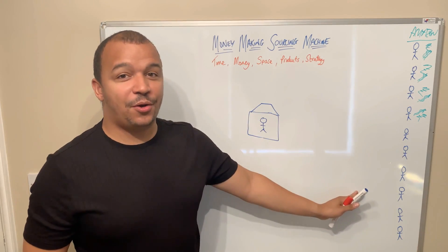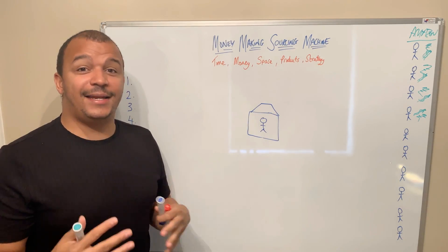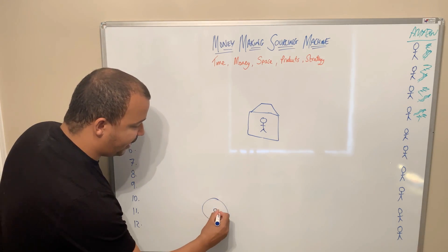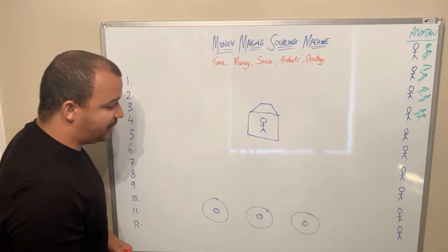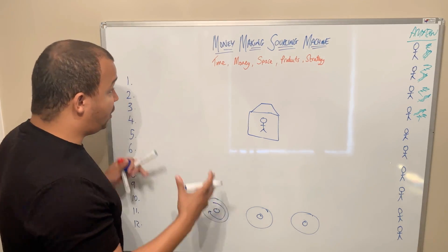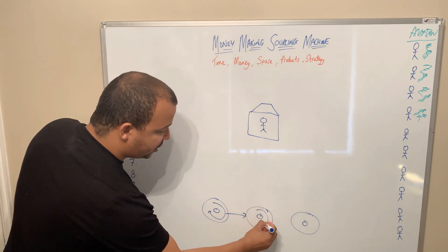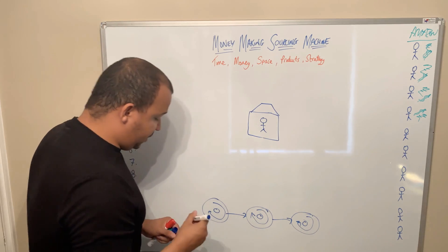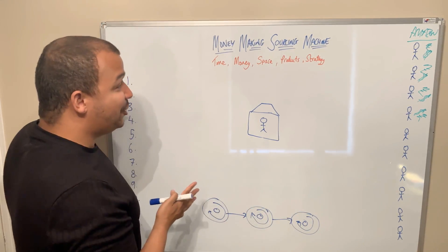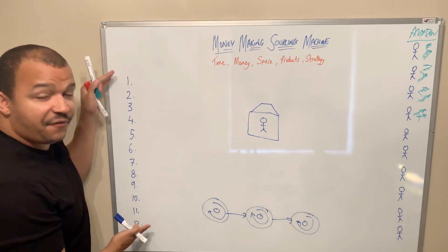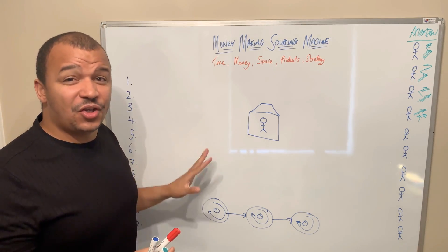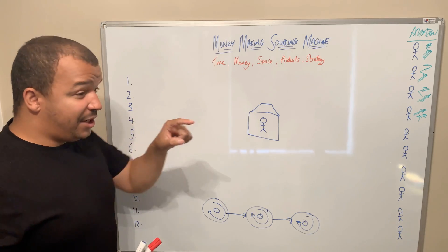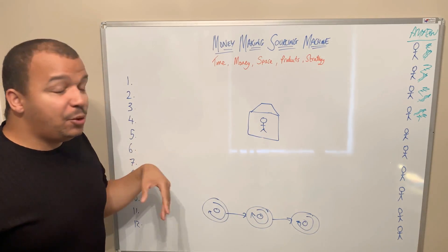What we discussed in the previous video is that this is a machine — we're trying to build a machine from sourcing. The three major elements are sourcing, purchasing, and shipping. You've got a flow of products coming from all these different sources. I'm going to talk to you about 12 different ways of sourcing in this video. We're going to set up multiple streams of sourcing profitable products, and I'm going to share real-life examples of each and how you set them up.